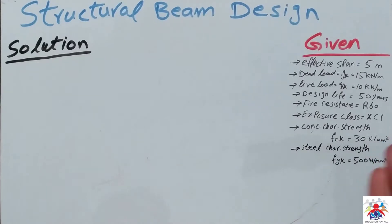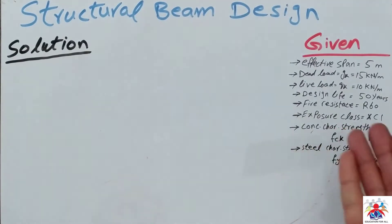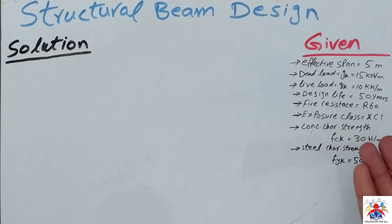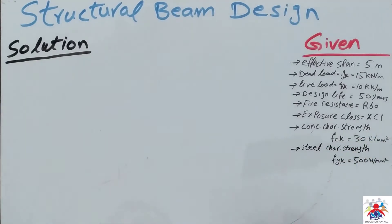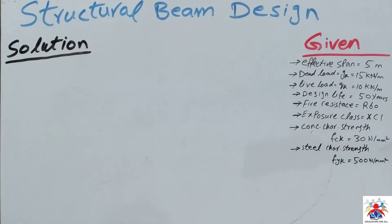Fire resistance is 60 minutes, so one hour fire resistance. If we have one hour fire resistance then we use exposure class XC1, which means our beam is in dry or permanently wet condition. Concrete characteristic strength is fck 30 Newton per millimeter square, and steel characteristic strength fyk is 500 kilonewtons.